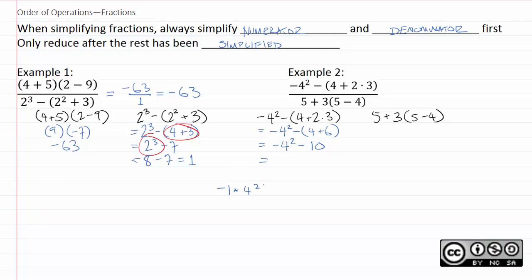And in the context of order of operations, you do the exponent before the multiplication. And so, with that in mind, we will have negative 16 minus 10, which comes out to negative 26.